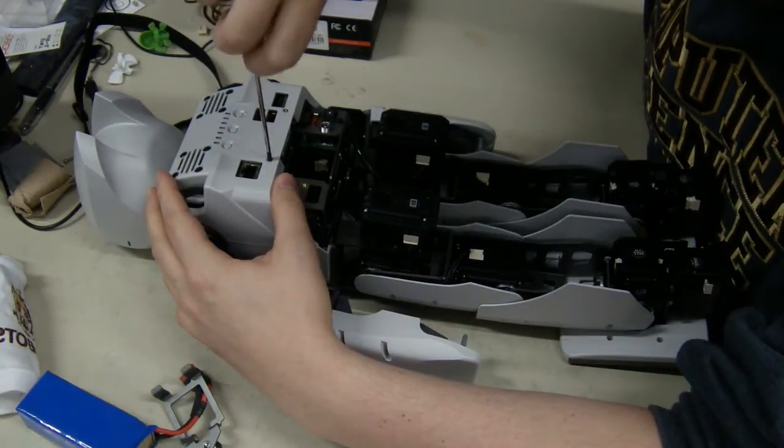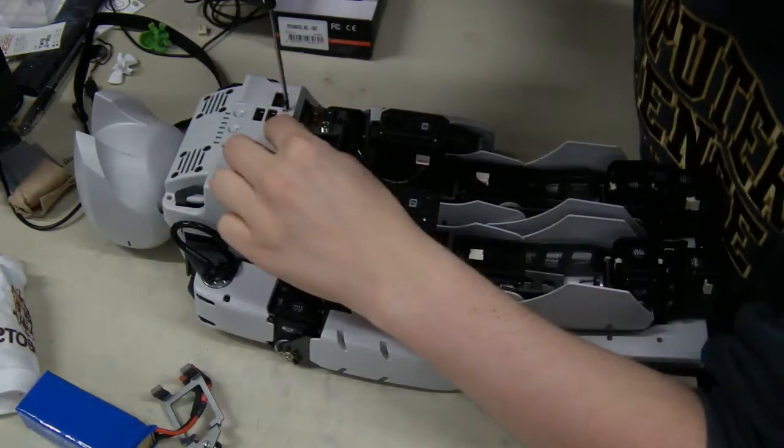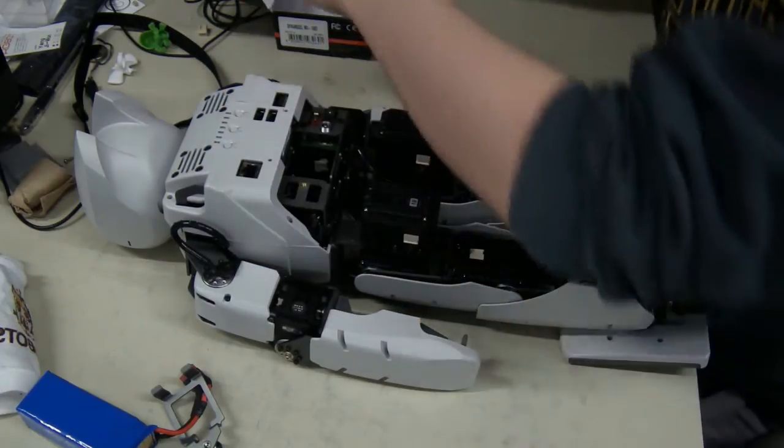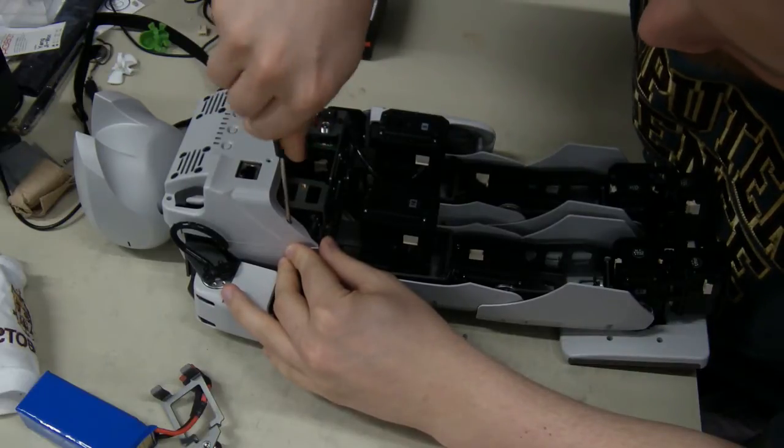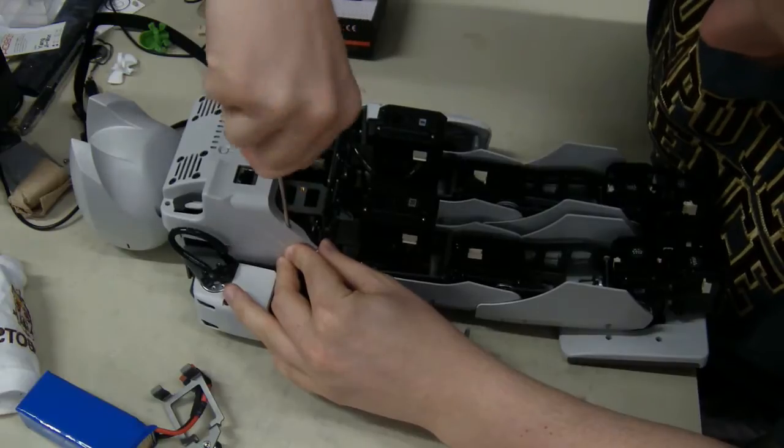So let's undo two screws that hold the back plate onto the frame. And just like the original Darwin, we've got four screws in the corners to hold the front and back pieces of the shell together.